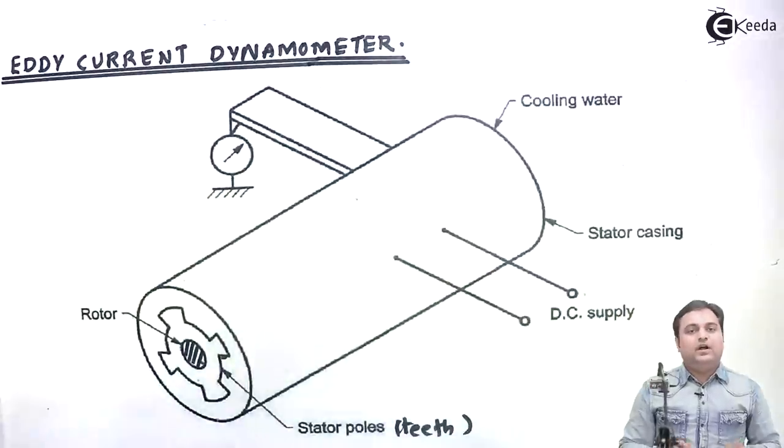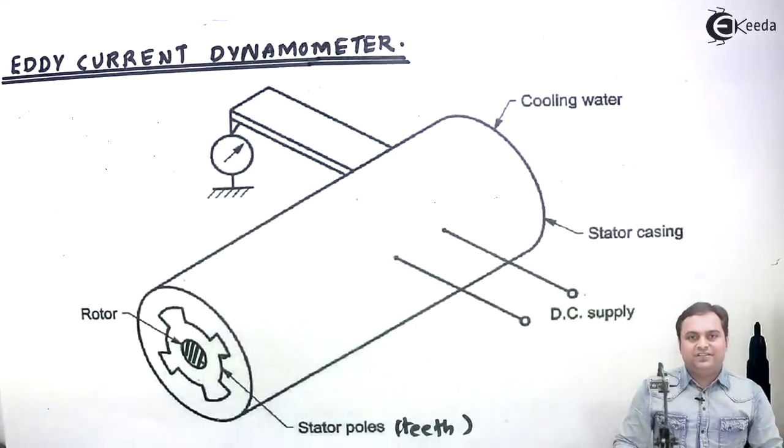So these are some advantages and disadvantages. I have shown the construction and working of the eddy current dynamometer. I hope you all have understood this.